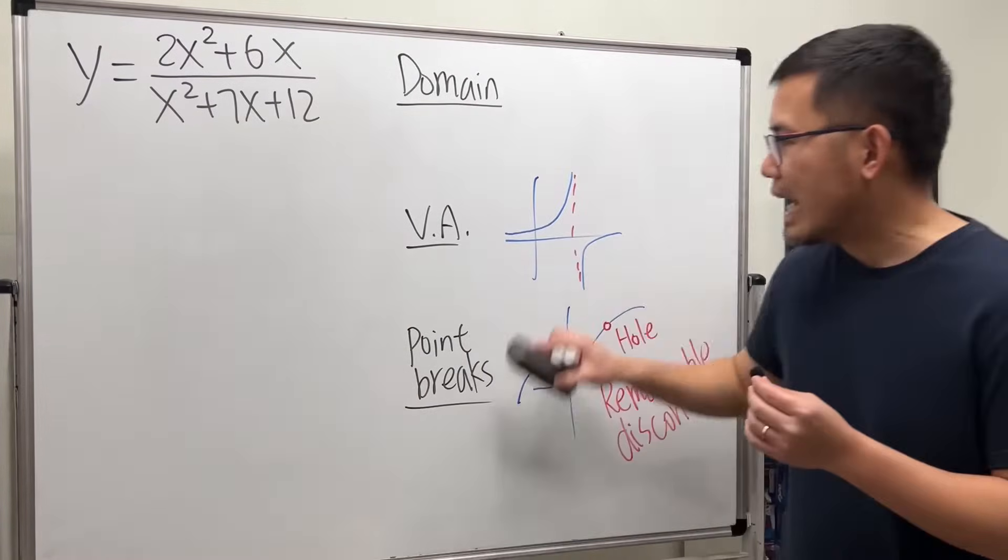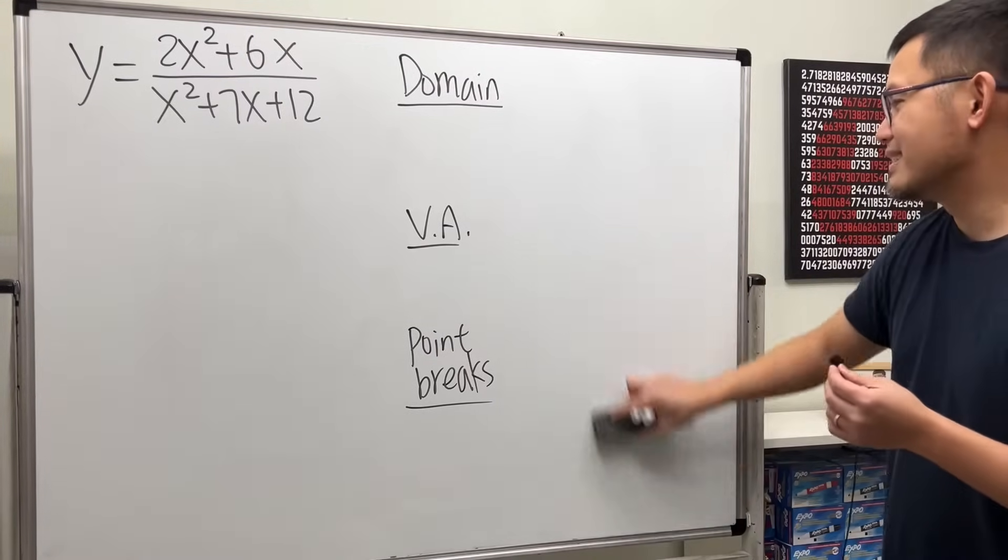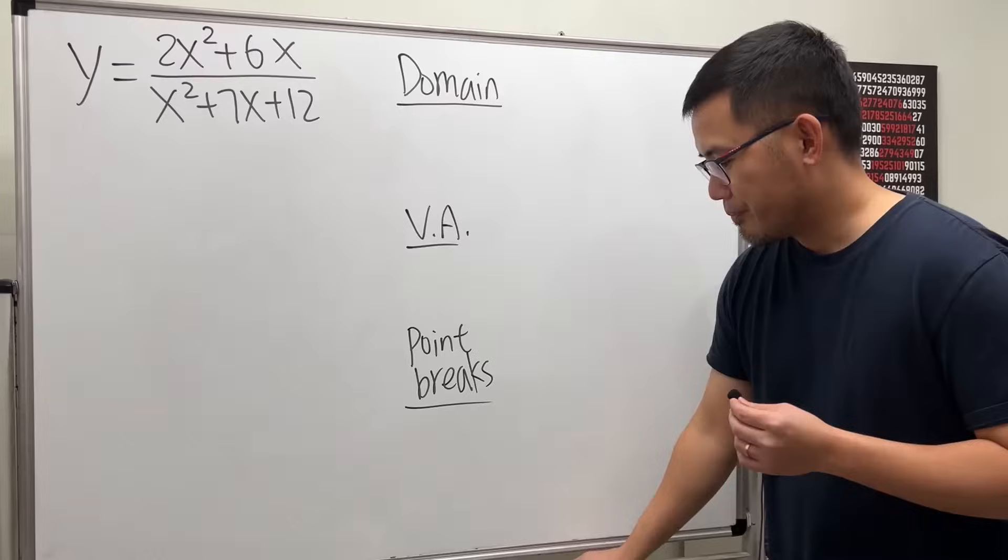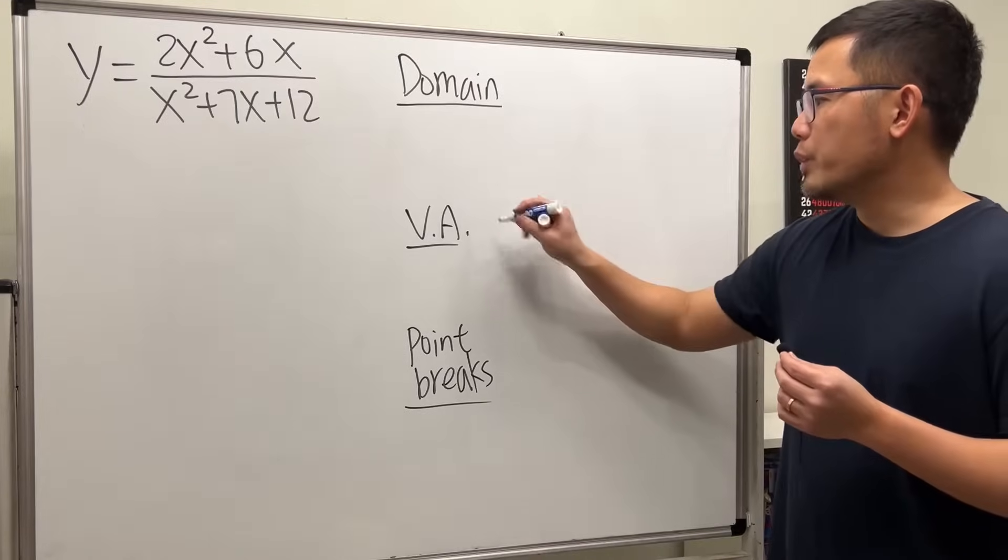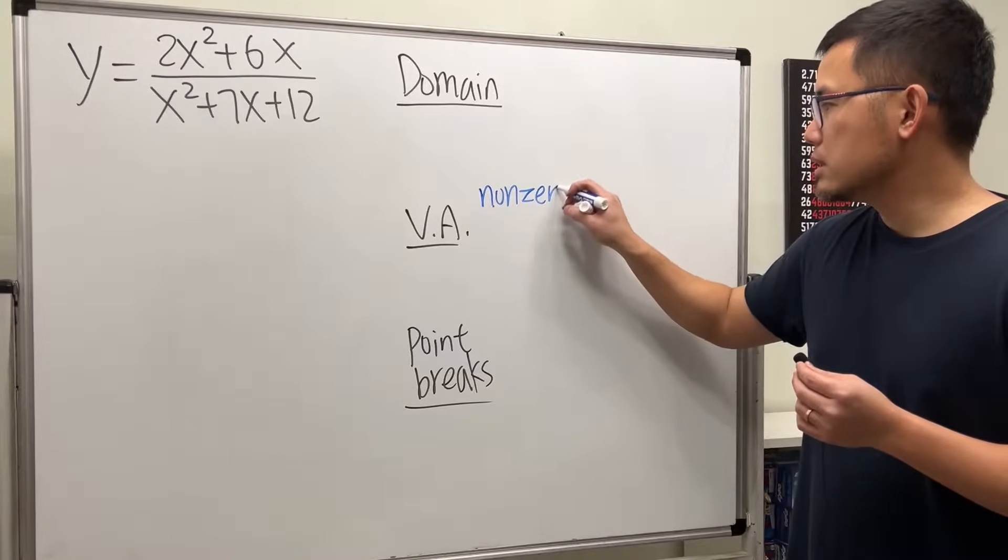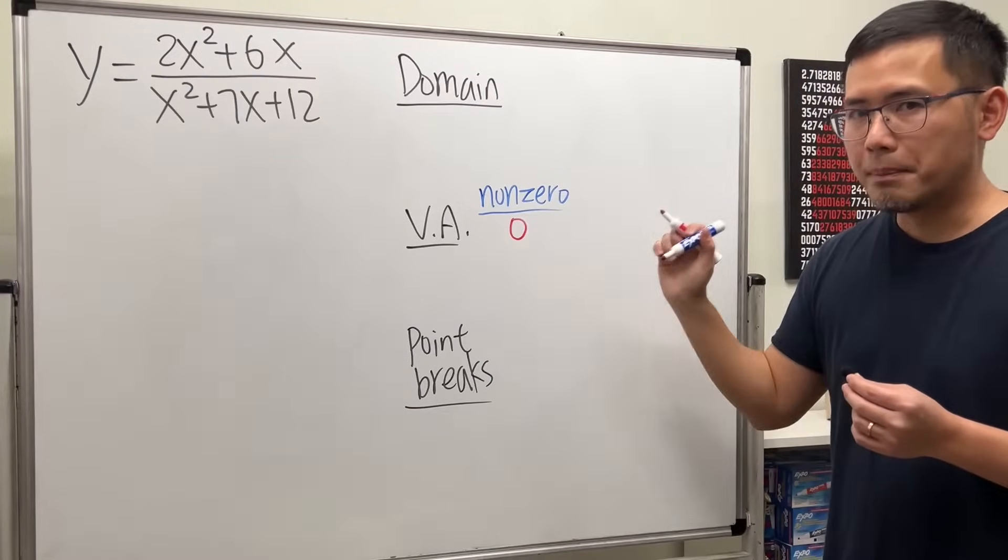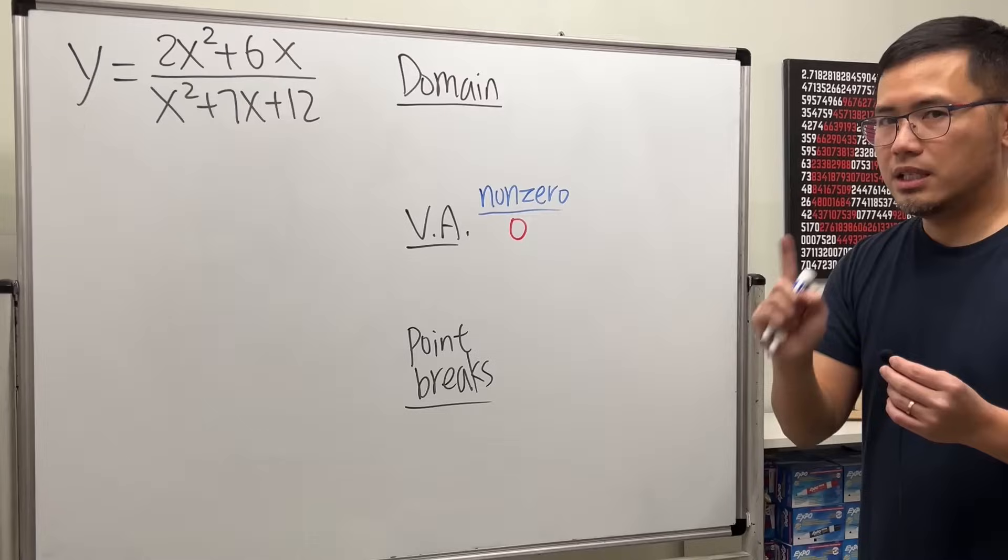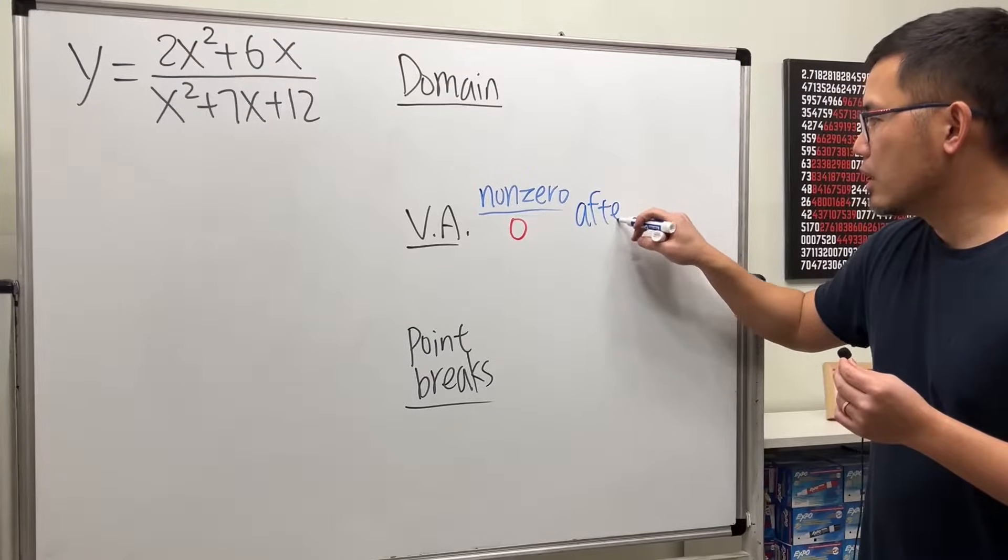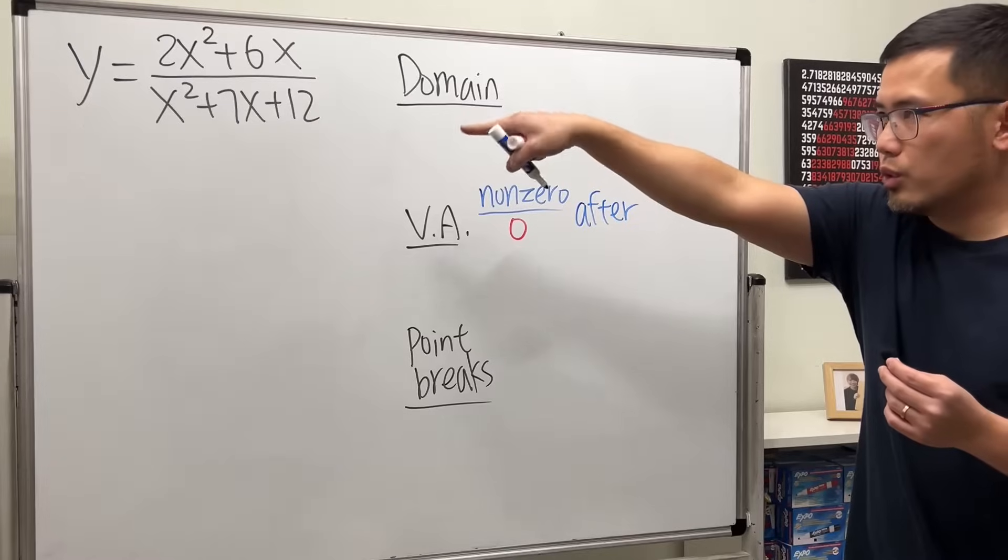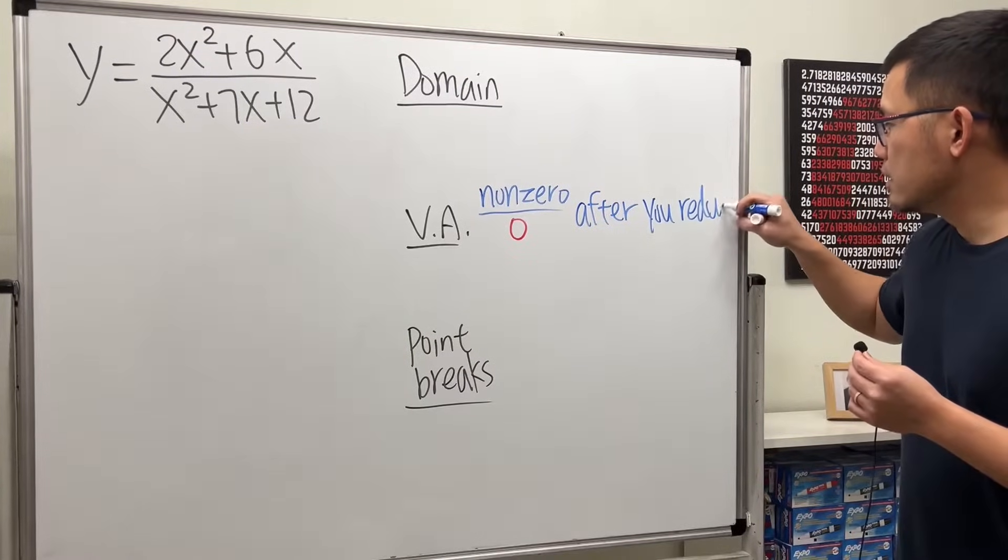Now, let's talk about how to find them from an equation because we don't have the graph yet. So for vertical asymptote, pay close attention to when we have non-zero numbers, non-zero number on the top over zero on the bottom. But the key right here is that this is after we reduce the rational function. After you reduce.